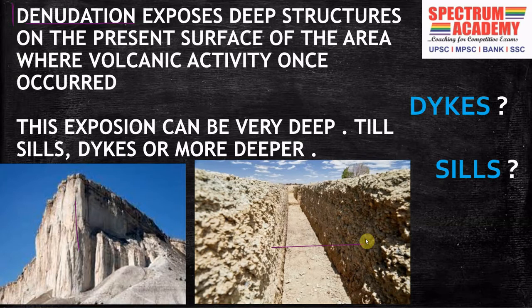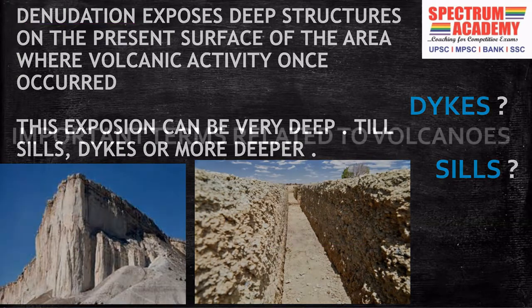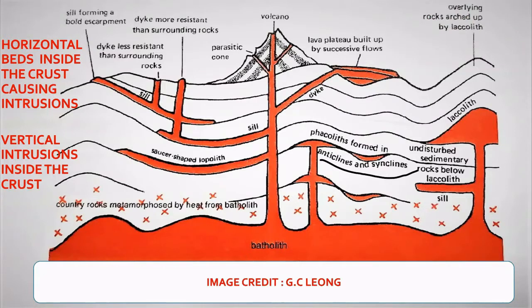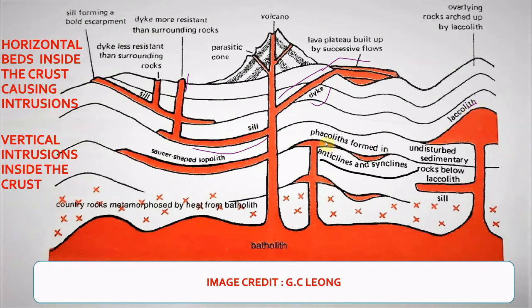Now let us understand some important terms related to volcanoes. The first is sills and dikes. The horizontal beds inside the crust causing the intrusion are called sills. The intrusions which are vertical are termed as dikes — the magma comes out of the dike. Both sills and dikes can get exposed to denudation when the upper layer gets eroded. The other important terms related to igneous intrusions are the types: lacoliths, lopoliths, facoliths, and batholiths, which are formed in various layers of the earth's crust.